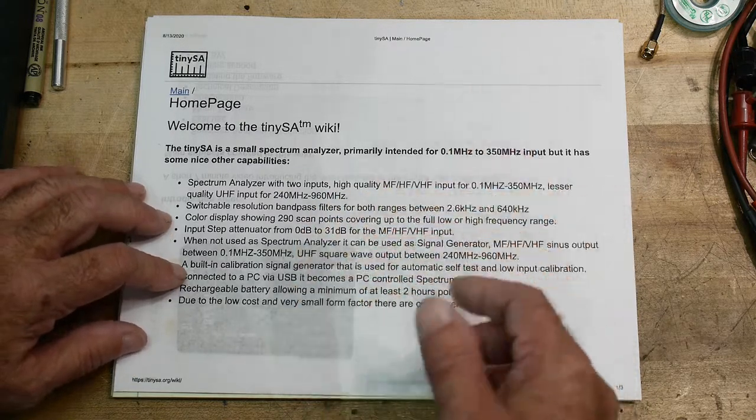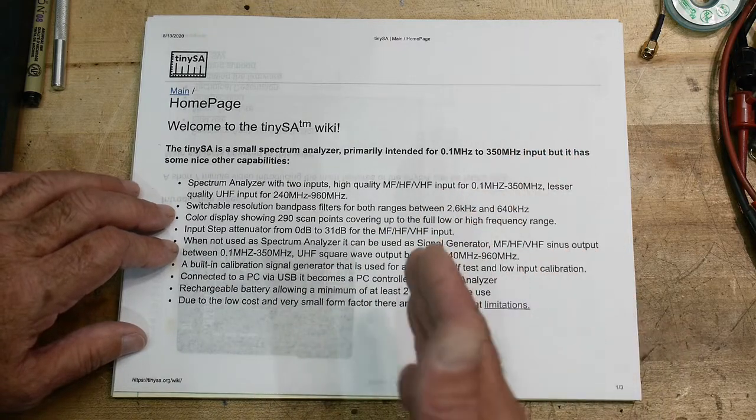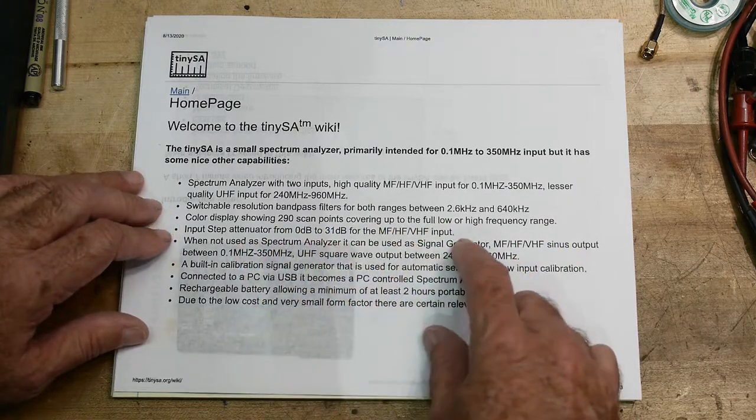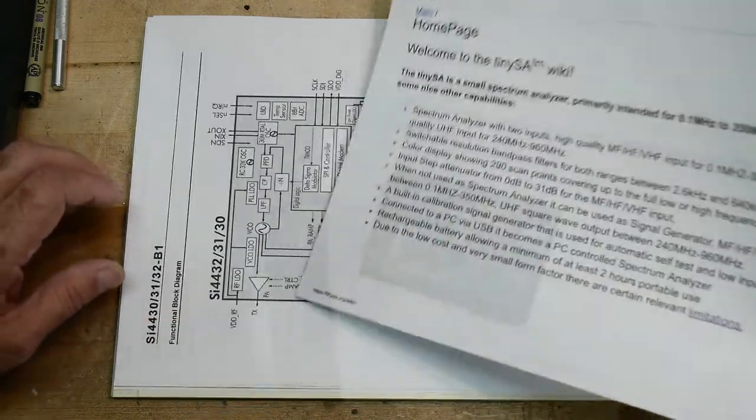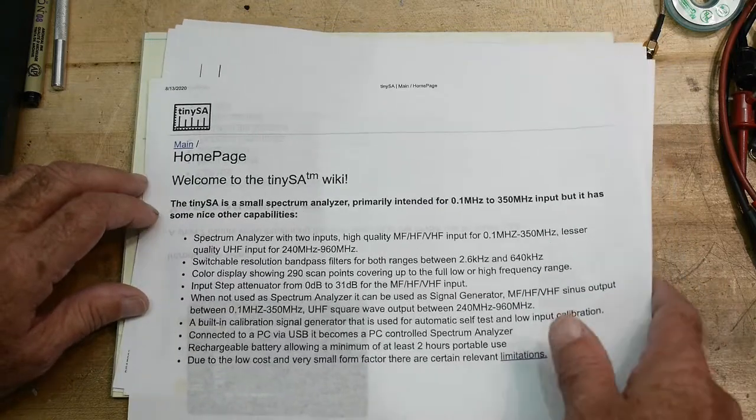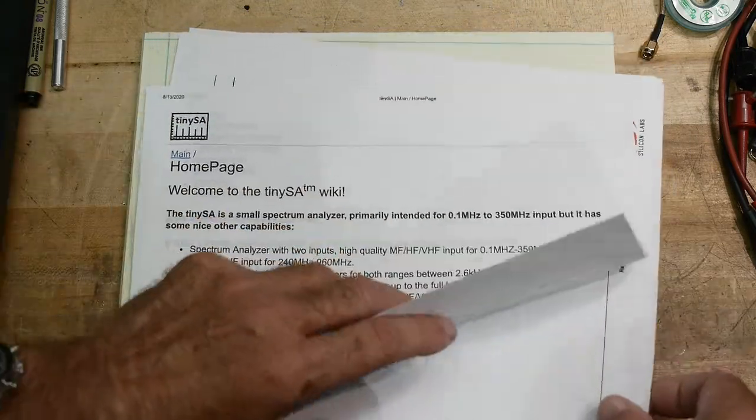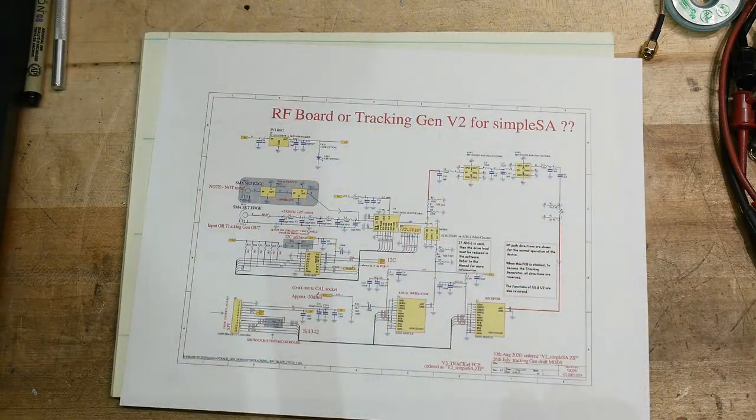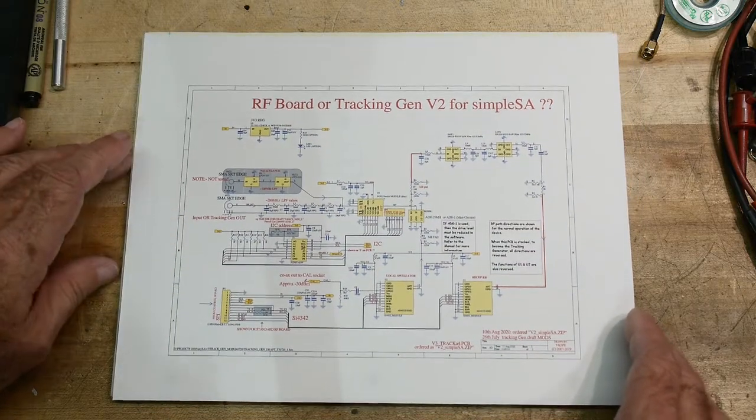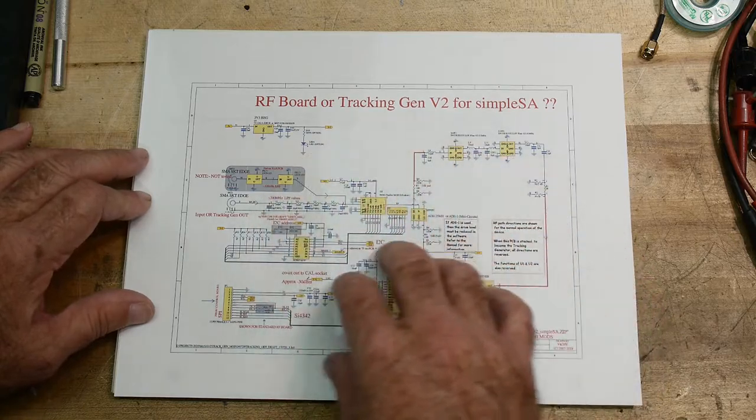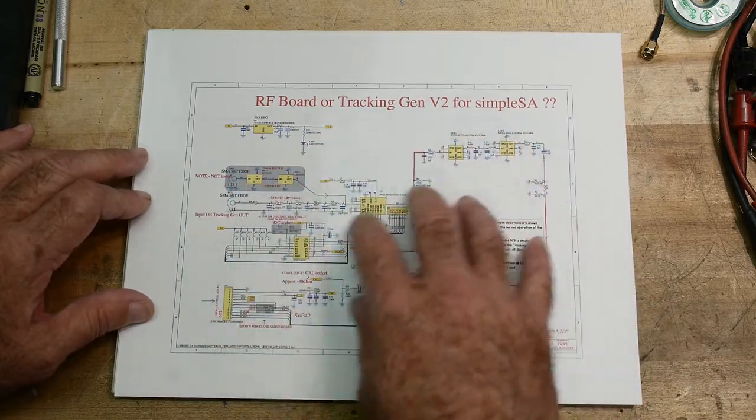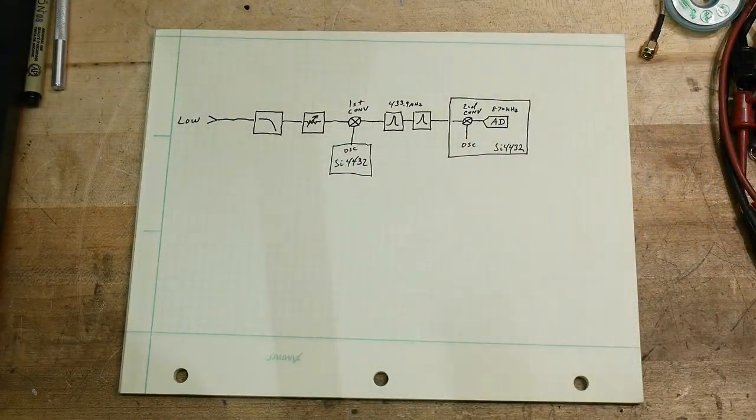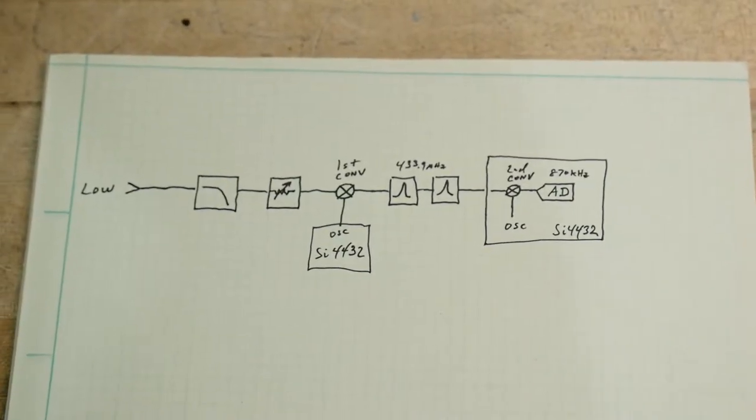And then there's bandpass filters, resolution bandpass filters. Those are DSP implemented. We'll see how that works. So if you go to some of the pages from the design team, you'll find actual schematics of the device. And so you can look to see how it's wired up and everything. But I've made a simple block diagram here. So let's zoom in on that.